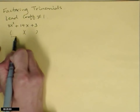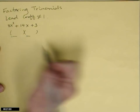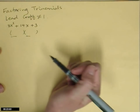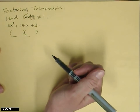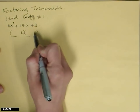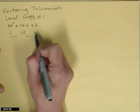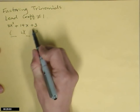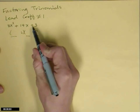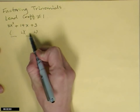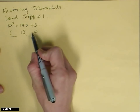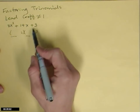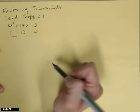Some things to think about: the two pieces in the first positions need to multiply together to give 8x squared, and the two last positions need to multiply together to give 3. The 3 is positive, so both factors need to be positive — or at least the same sign. The 14x is plus, so they both need to be plus.